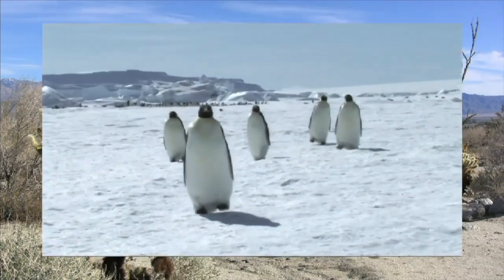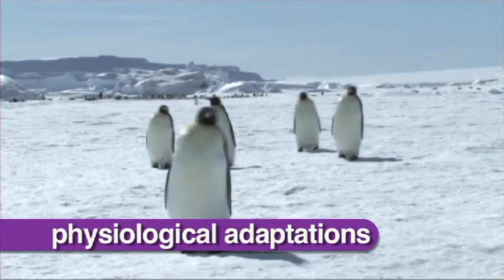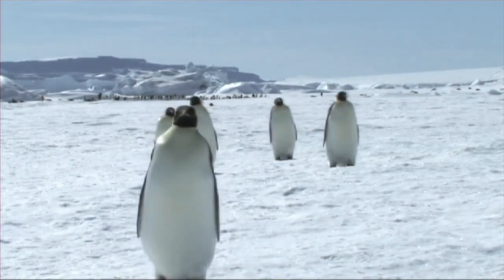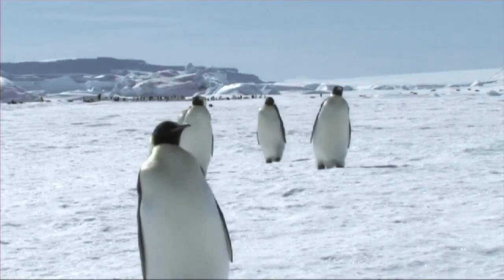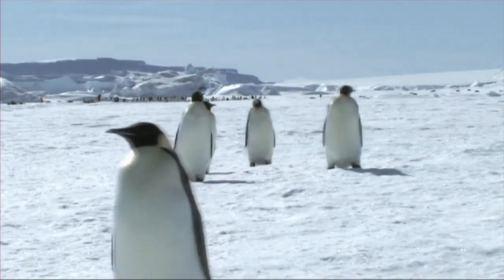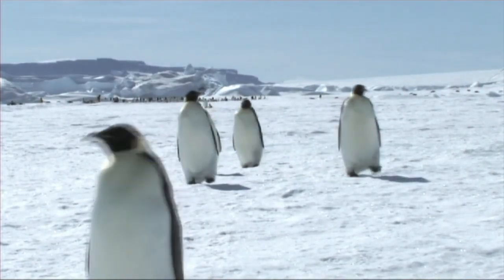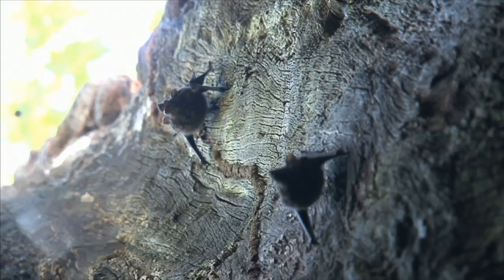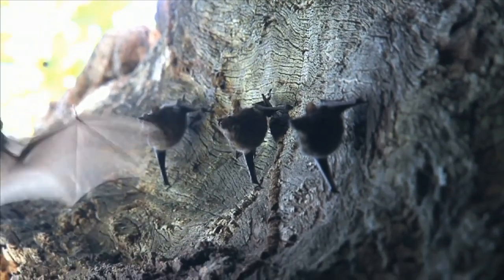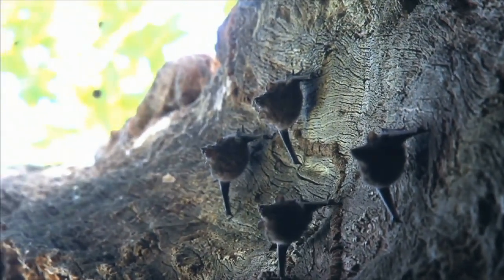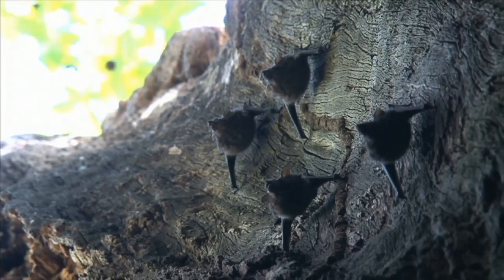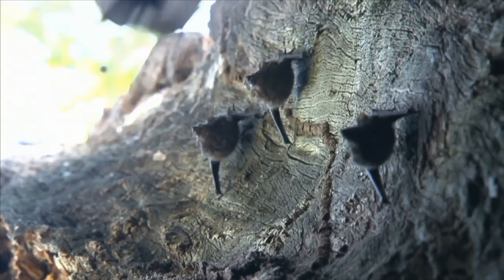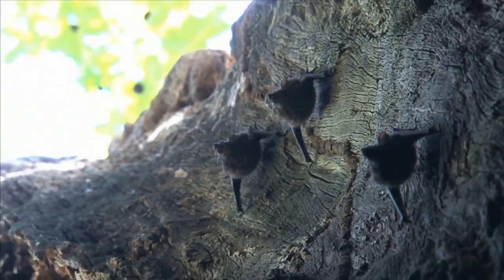Animals and plants also have physiological adaptations. For example, an emperor penguin has a complex heat exchange system that allows 80% of heat in its breath to be recaptured in the nasal passages. Hibernation is a physiological trait as well as a behavioral trait. Bats are hibernators and their physiological adaptation allows them to operate biological functions at very low core body temperatures.